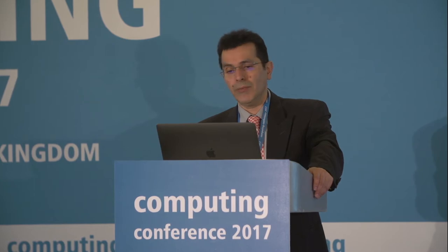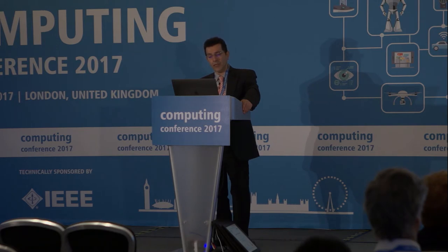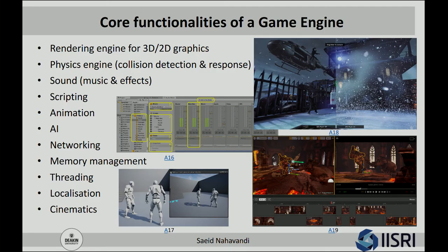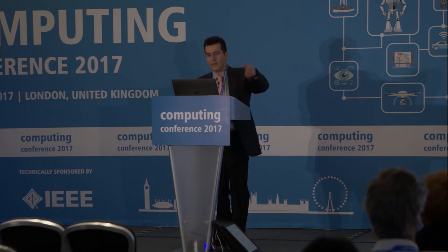The core functionalities of a game engine include a rendering engine for 3D and 2D graphics, physics engine, sound, music and sound effects, scripting, animation, AI, networking, memory management, threading, localization, and cinematic effects. There are many games engines out there — Wikipedia lists around 176 as of 2017 — for various purposes with different price brackets. I've selected three that we have experience with: Unreal, Unity, and CryEngine. Key aspects of a great game engine are visual rendering quality, a flexible production pipeline, updates with the latest technology, ecosystem, and cost.